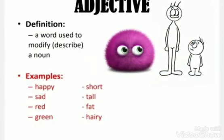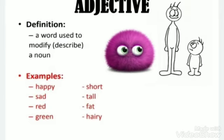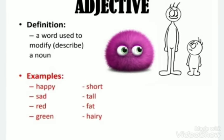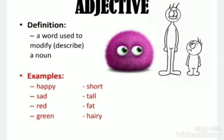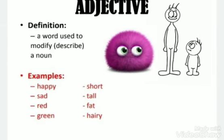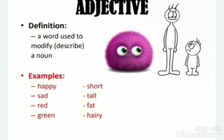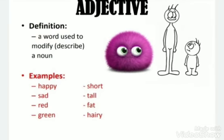Adjective — a word used to modify or describe the quality of a noun. Like: happy, sad, red, green, short, tall, fat, hairy, etc.